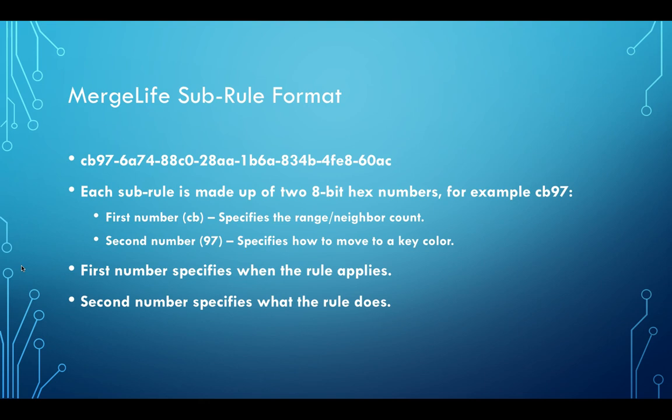So this is the MergeLife sub rule format. The rule, that whole entire hexadecimal string, that defines the entire rule. But each sub rule is made up of two 8-bit hex numbers. For example, CB97. The first one specifies when the rule applies. The second one specifies what the rule actually does. And what they do is very simple. They converge to one of the key colors. Only one rule applies to each pixel per update frame.